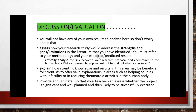To finish off your research proposal, you need a discussion — sometimes called an evaluation. You won't have any of your own results to analyze here. What you do need is to assess how your research study would address the strengths and gaps or limitations in the literature you've already identified. You must refer to your methodology and your expected predicted results, and critically analyze the link between your research proposal and the actual topic — for example, chemotaxis in the human body. Did your research proposal set out to find what you wanted? Explain how.